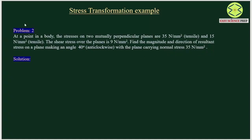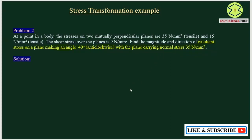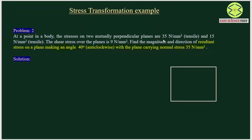So, we have to find basically the resultant stress on a plane making 40 degree angle with the plane carrying 35 N per mm². This is a very similar problem we have discussed last time. Before going for the actual solution, we will draw the initial problem. In the body, the stresses on two mutually perpendicular planes are 35 N per mm² and 15 N per mm². So these are the two mutually perpendicular planes we have.